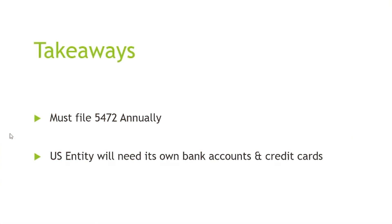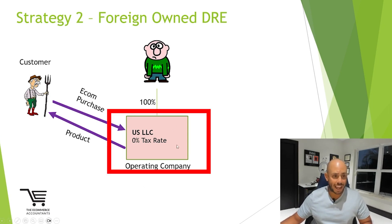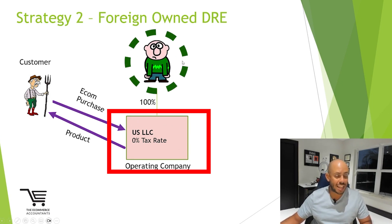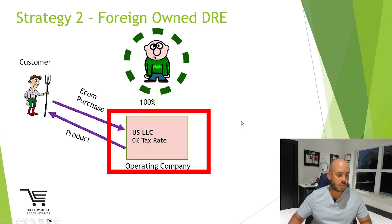The second takeaway is that this entity will need its own bank account and its own credit cards. This company will need its own bank accounts and credit cards, and it's definitely important to keep this structure separate from anything else above it — whether a foreign business entity owns it or an individual owns this U.S. LLC.